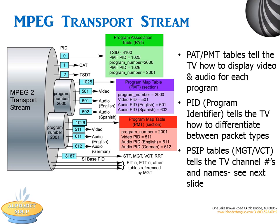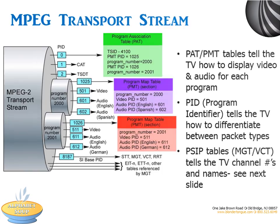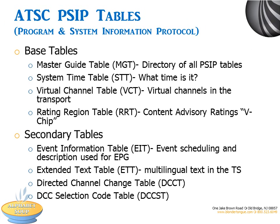STT, MGT, VCT, etc. are the PSIP, or Program and System Information Protocol. PSIP provides a receiver with the additional information necessary to browse and select events via an electronic program guide, or EPG. We'll cover more on the next slide, but bottom line, they tell the TV the channel numbers and the names. PSIP is metadata inserted into a transport stream that enables tuning to virtual channels and provides television and guide information, such as channel name, language, captioning, time of day, etc. It basically tells you where you are, where you're going, and what's on now.